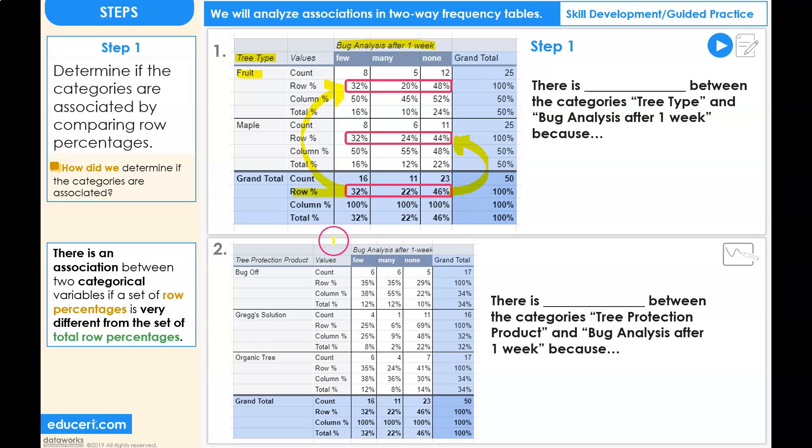There is very little difference, and there is an association between two categorical variables if a set of row percentages is very different from a set of total row percentages. I would say that these two row percentages are not very different.